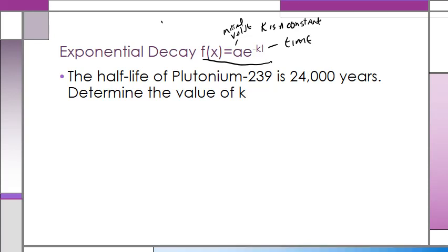So we're given a problem here, and we're told that the half-life of plutonium-239 is 24,000 years, determine the value of K. We've got to determine the value of the constant in this formula.